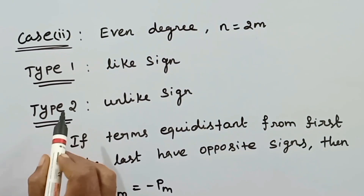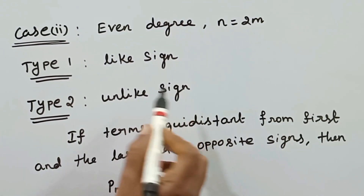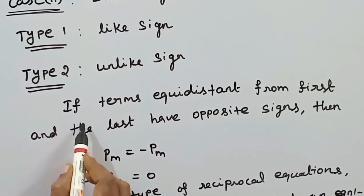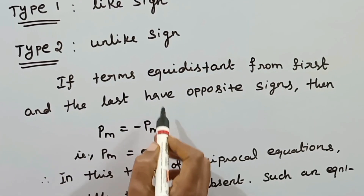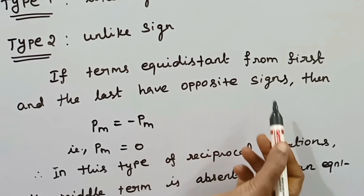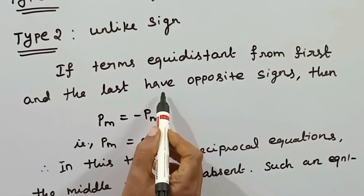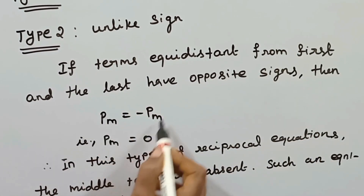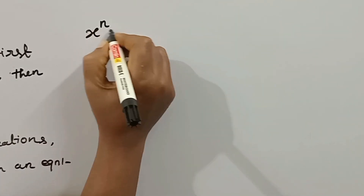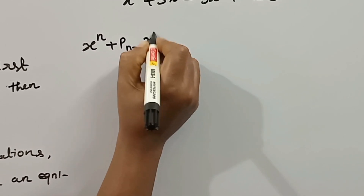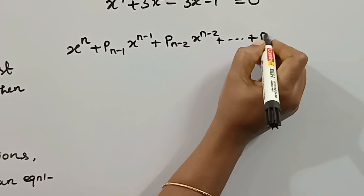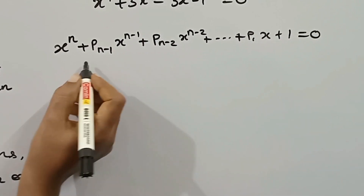For Type 2 unlike sign, the difference is that the first term and last term have opposite signs — the two terms are opposite sign. That is p_m equal to minus p_m in general. The general form of a reciprocal equation was discussed in our previous videos: x power n plus p_{n-1} x power n-1 plus p_{n-2} x power n-2 plus ... plus p_1 x plus 1 equal to 0.